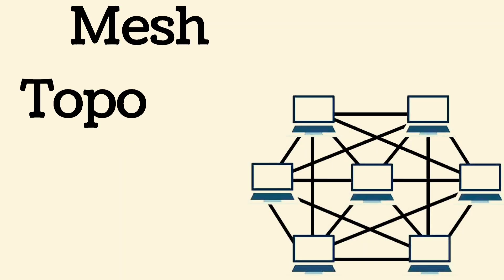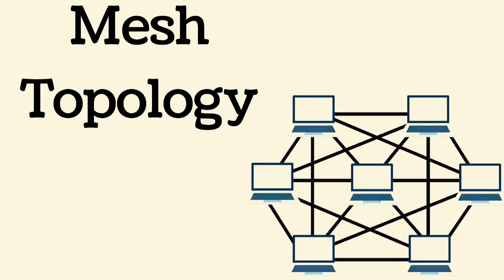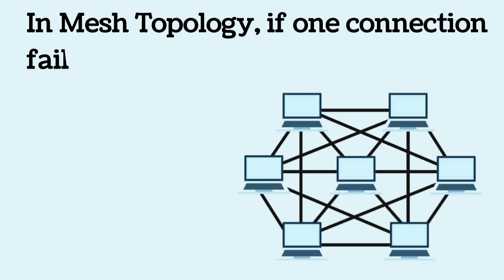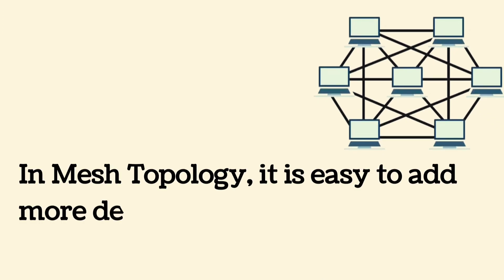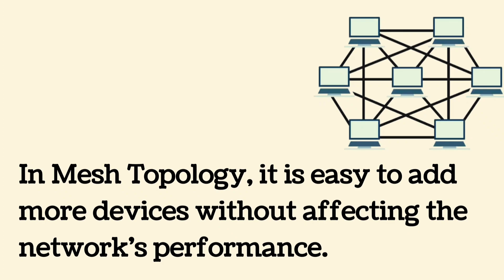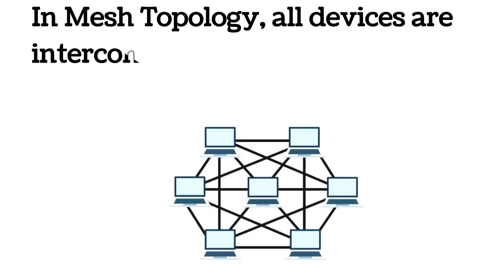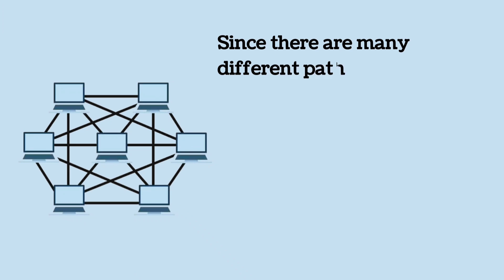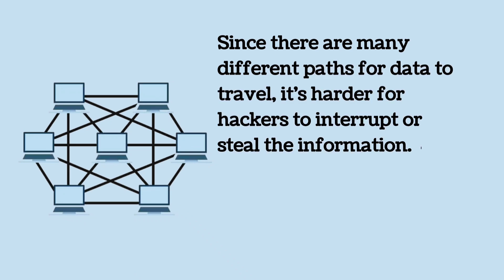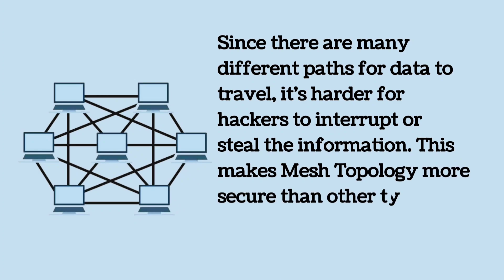Mesh topology: all nodes are interconnected, where each device is directly connected to every other device in the network. Advantages: if one connection fails, data can still find another way to travel; it is easy to add more devices without affecting performance; data can travel quickly between any two devices; and since there are many different paths, it is harder for hackers to interrupt or steal information, making mesh topology more secure than other types.